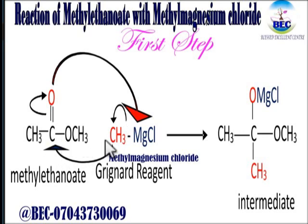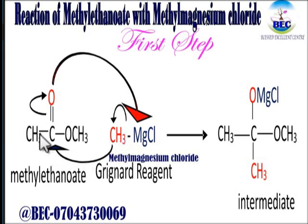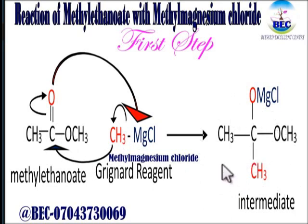The next thing is that this carbon that is positively charged will pick up the CH3 methyl group that is in red. When you attach this methyl group to this carbon, as this arrow illustrates, you are going to have this structure — and this is an intermediate that is formed in the course of the reaction. In the next step we are going to repeat this and add water to it in the presence of acid.